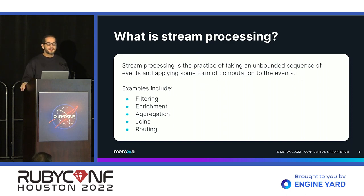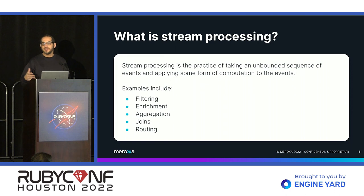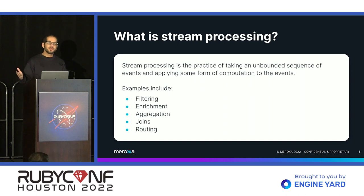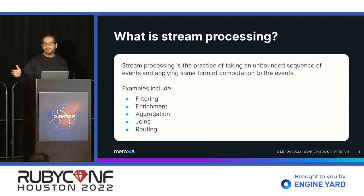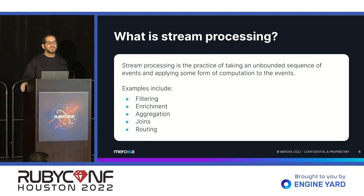Some examples of stream processing: filtering, where you get a number of events and you want to drop some of them. Enrichment, where you want to take each event and augment it with additional information. Aggregation, where you do some processing across a number of events — maybe count them, sum them, do some calculation. Joins, similar to a SQL join, where you take two sets of data and mash them together by some common element. And routing, where you want some events to go one place and other events to go somewhere else.